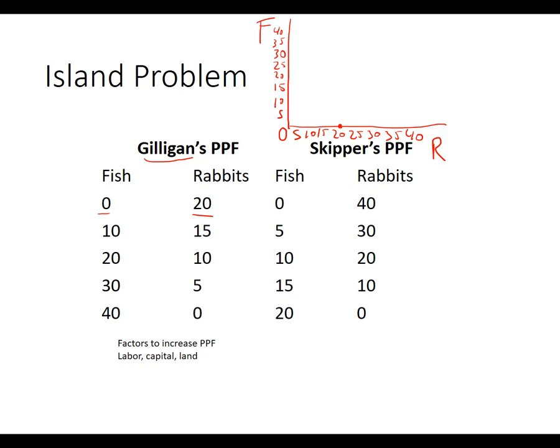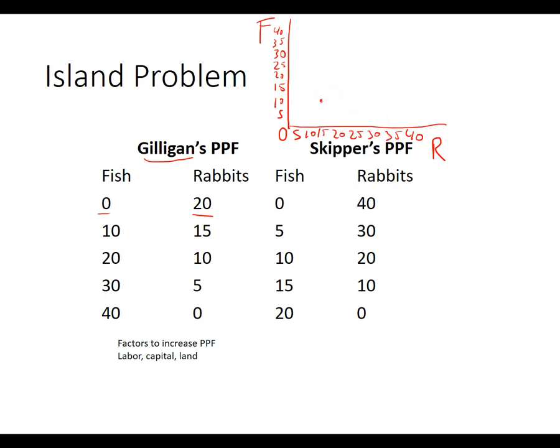Next, Gilligan could catch ten fish and fifteen rabbits — so that's the point at fifteen rabbits and ten fish. Then the next combination: he can catch twenty fish and ten rabbits, so we move up to twenty fish and ten rabbits on the graph.